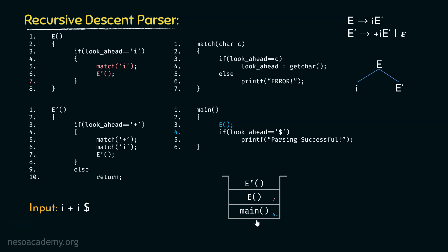This stack right here is called the recursion stack. And it is indeed a top-down parser. In case of top-down parser, from the start symbol, we basically descend in order to generate the parse tree for the input stream. And that's the reason why it is called recursive descent parser — we are using a recursion stack, and due to top-down parsing we are basically descending. Hence the name recursive descent parser.